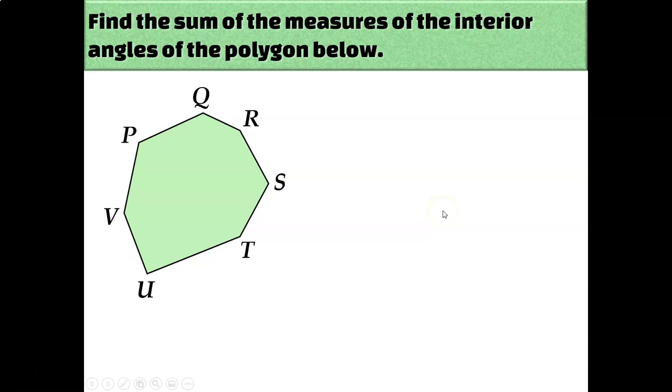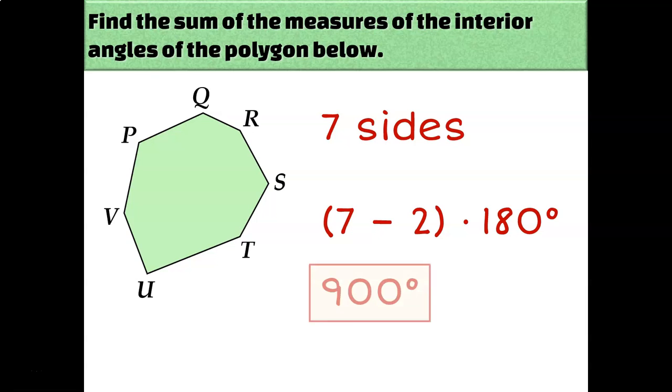So if I wanted you to figure out the sum of the interior angle measurements of this polygon, the first thing you need to identify is how many sides does it have? One, two, three, four, five, six, seven sides. So since it has seven sides, I can say that n minus two times 180, well, n for that would be seven. So seven minus two times 180, or five times 180. So the sum of the interior angle measurements of a heptagon is 900 degrees.